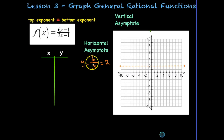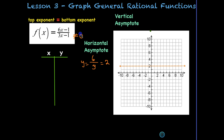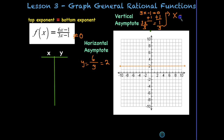Now let's find the vertical asymptote. We set the denominator equal to zero — the denominator cannot equal zero, or the function is undefined. So we set it equal to zero and solve: add 1 to each side to get 3x = 1, then divide by 3. We end up with a vertical asymptote of x = 1/3.